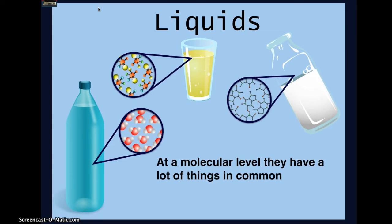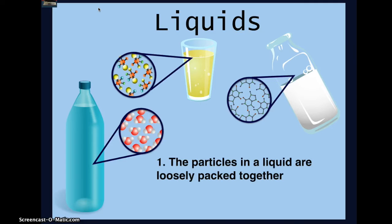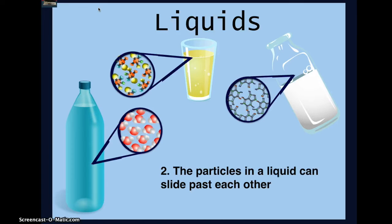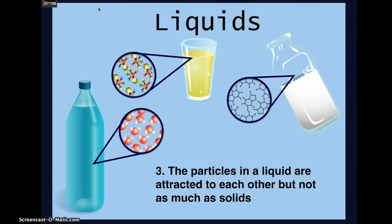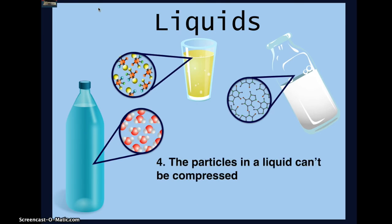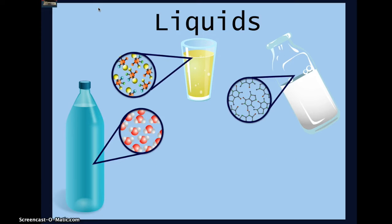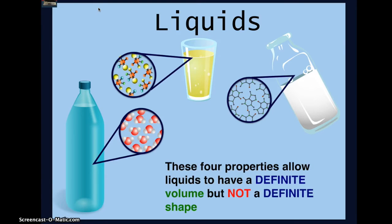At a molecular level, they have a lot of things in common. The particles in a liquid are loosely packed together. The particles in a liquid can slide past each other. The particles in a liquid are attracted to each other, but not as much as solids. The particles in a liquid can't be compressed. These four properties allow liquids to have a definite volume, but not a definite shape.